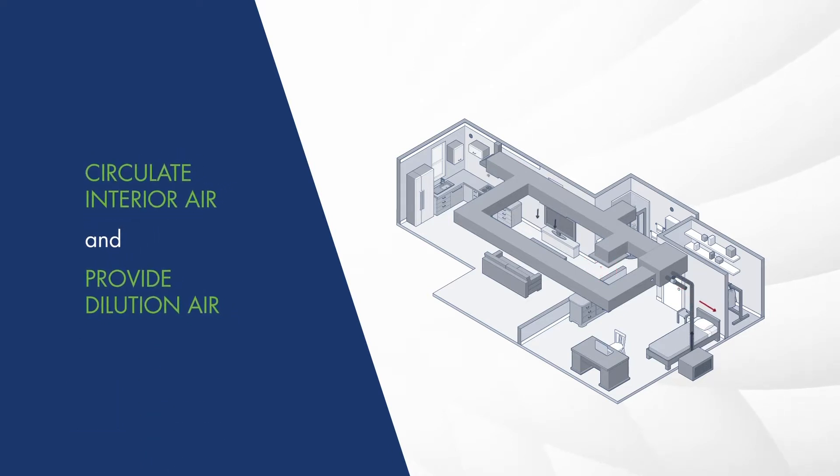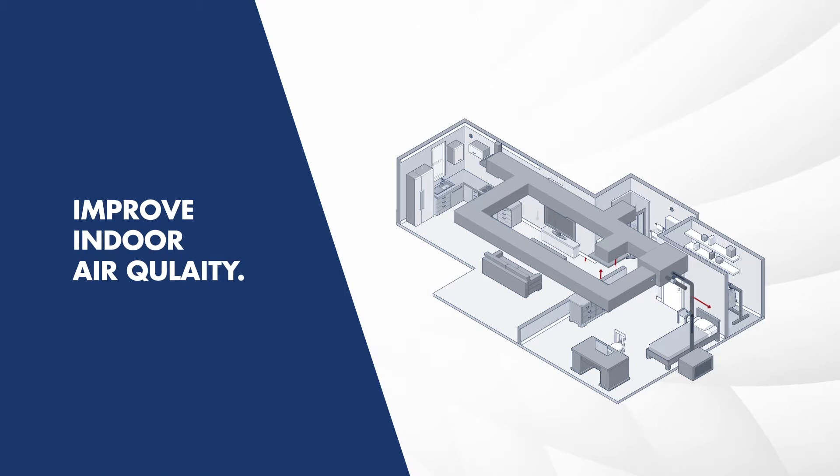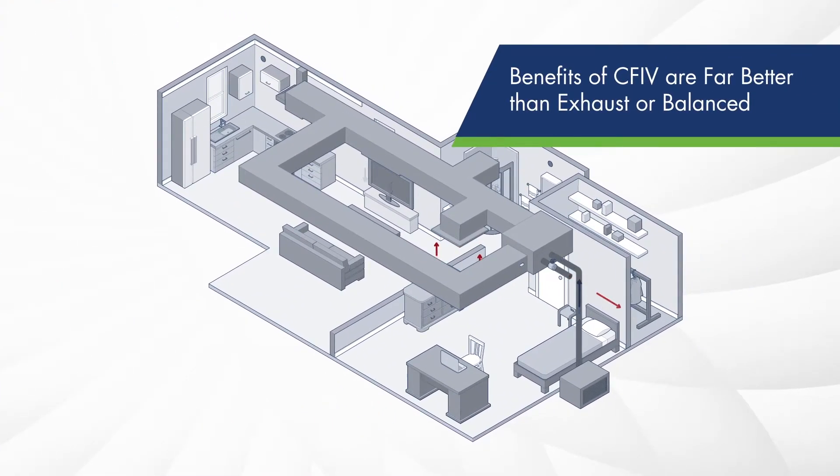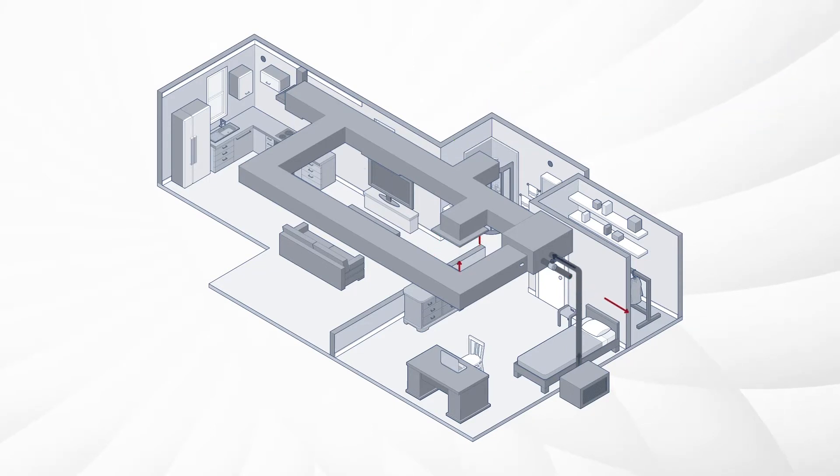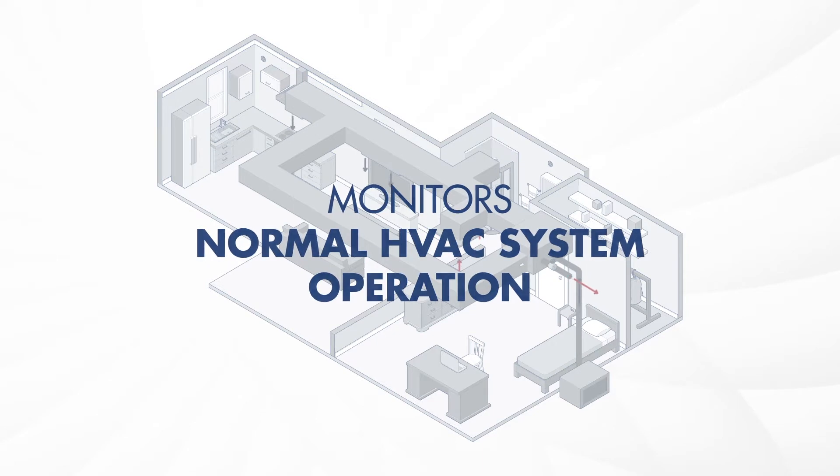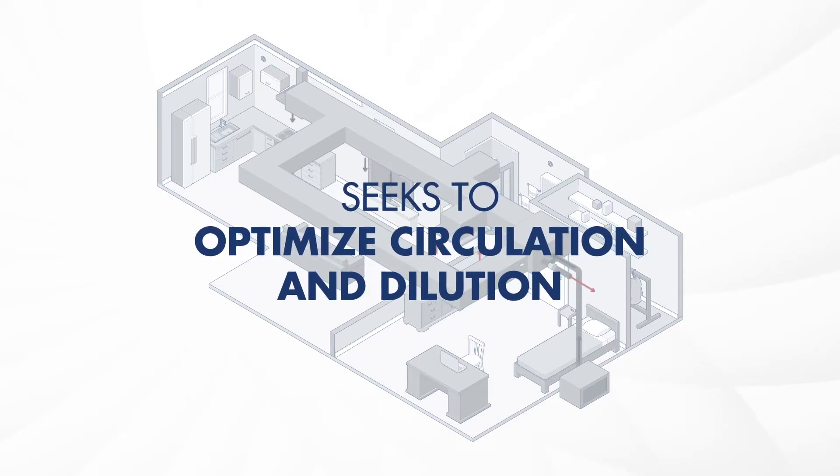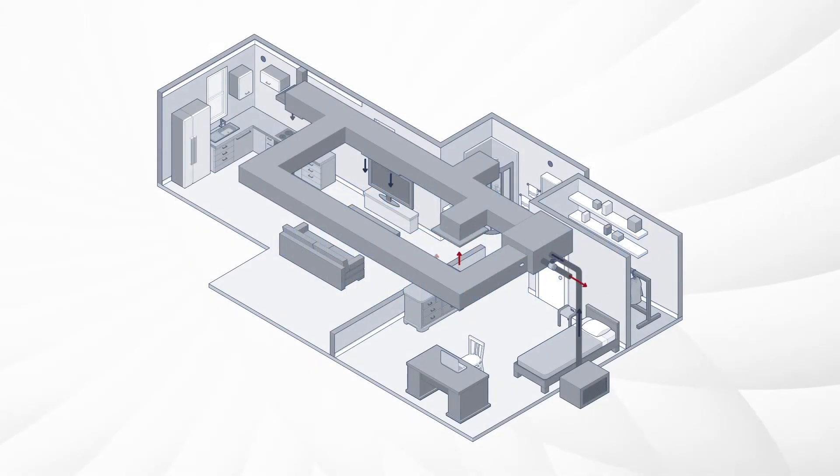The benefits of CFIV are far better than exhaust or balanced ventilation. A CFIV system monitors normal HVAC system operation and seeks to optimize circulation and dilution by piggybacking on the central system's normal operating periods, thus minimizing any energy penalty associated with operation of the central fan or other ventilation devices.